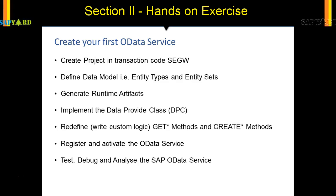This is the brief outline of what we'll do today. We'll create a project in transaction ACGW. Then we will define the data models where we will define our entity type and the entity set. We'll regenerate the runtime artifacts, and when you regenerate artifacts, the data provider classes and the model provider classes will get created.